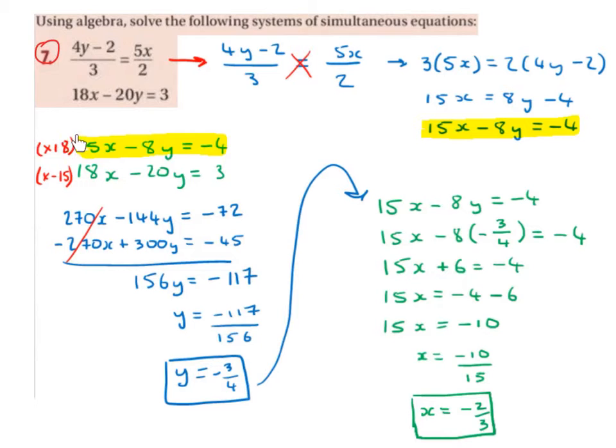So 18 by 15x is 270x. 18 by minus 8y is minus 144y. 18 by minus 4 is minus 72. Minus 15 by 18x is minus 270x. Minus 15 by minus 20y is plus 300y. And minus 15 by 3 is minus 45.